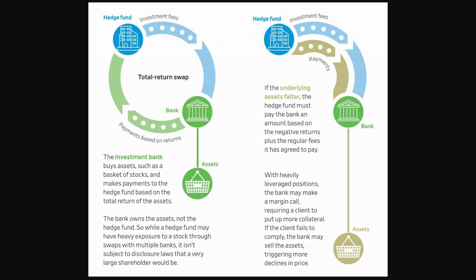Obviously it didn't work out great for him. But I think that's the way a lot of the people that retail investors are up against operate. These ISDA contracts — how can they be manipulated? In the case of Archegos, they used the total return swaps to conceal their true level of exposure to certain stocks because, again, this is held off of their balance sheet. So it allowed them to take on much more leverage than they would have been able to otherwise.